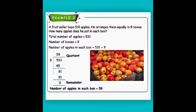We need to know the table of 9. In 53, how many 9s are there? There are 5 nines. 5 × 9 = 45. So 53 − 45 = 8. Take down the 1. In 81, how many 9s are there? There are 9 nines. 9 × 9 = 81, remainder = 0. The number of apples in each box is equal to 59.